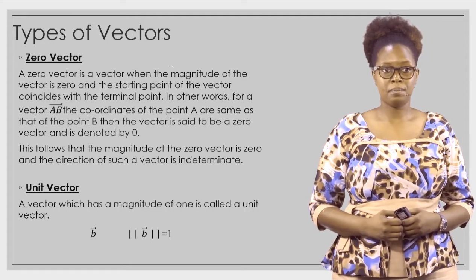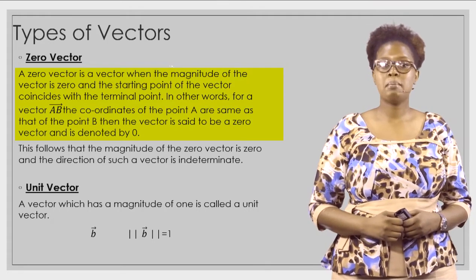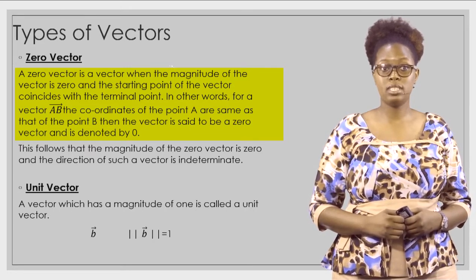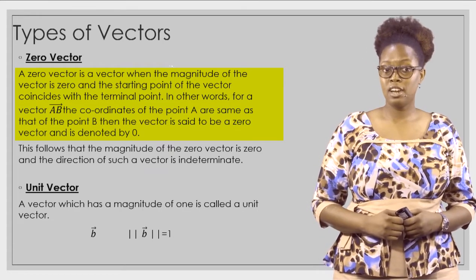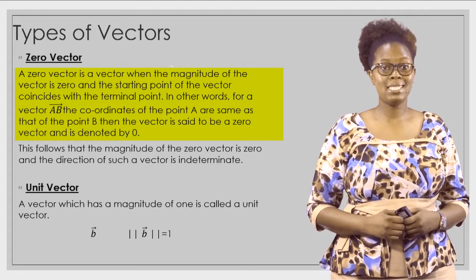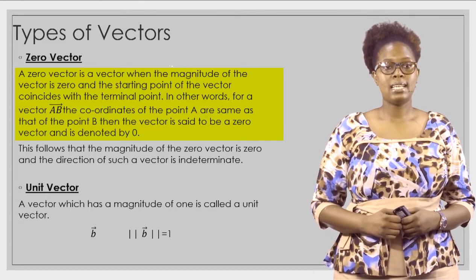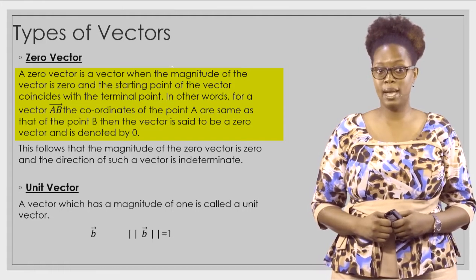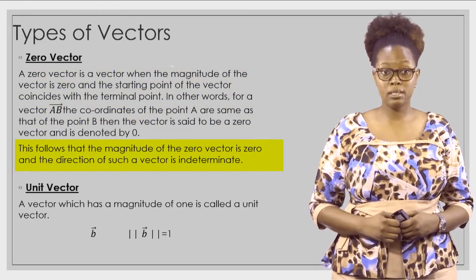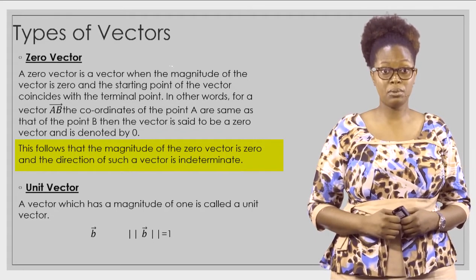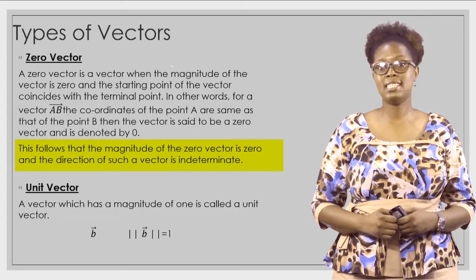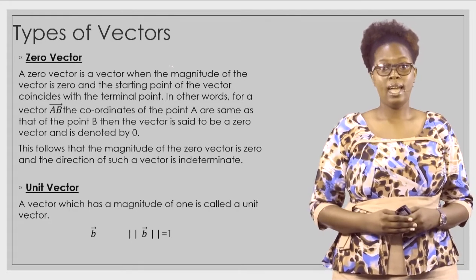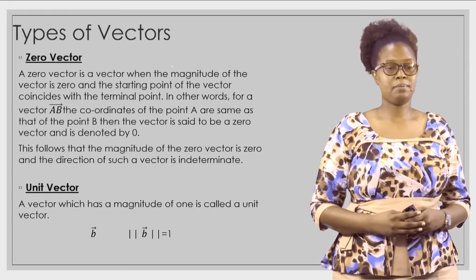Types of vectors: the zero vector. A zero vector is a vector when the magnitude of the vector is zero and the starting point coincides with the terminal point. In other words, for a vector AB, the coordinates of point A are the same as point B. The magnitude of the zero vector is zero and the direction is indeterminate.